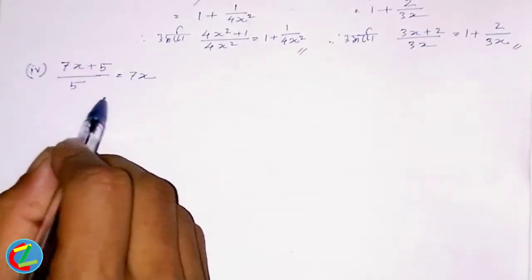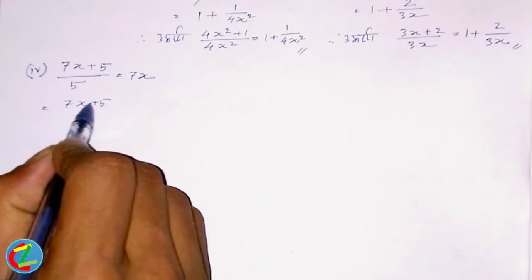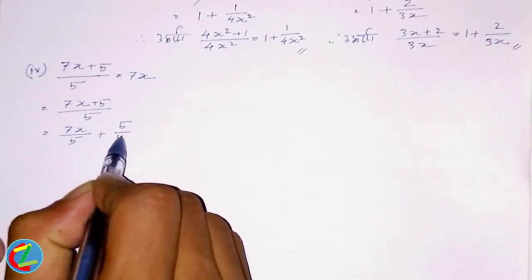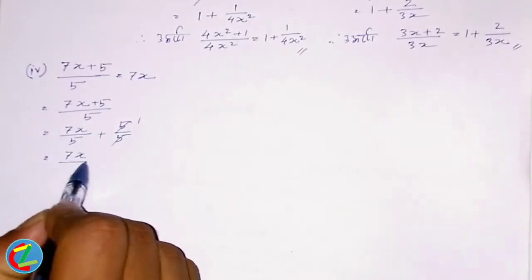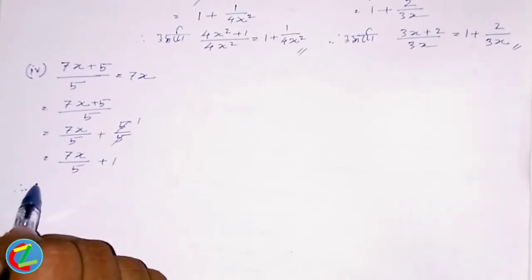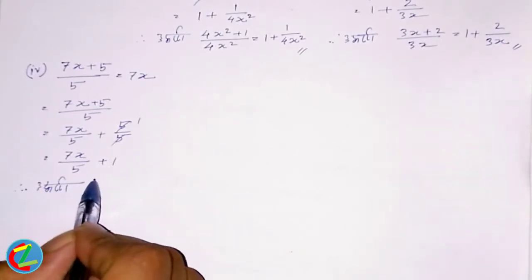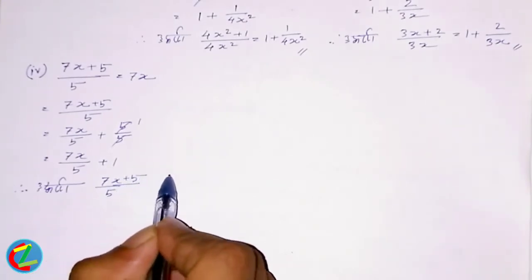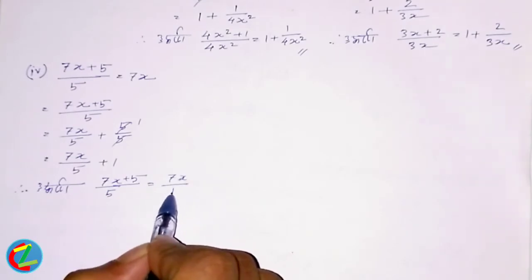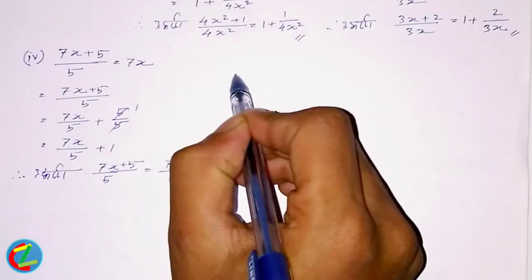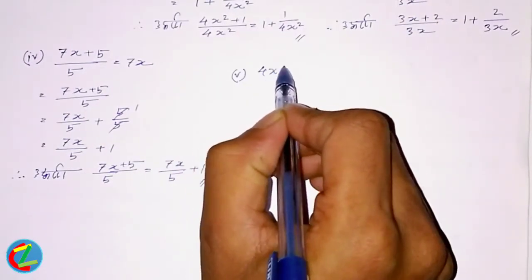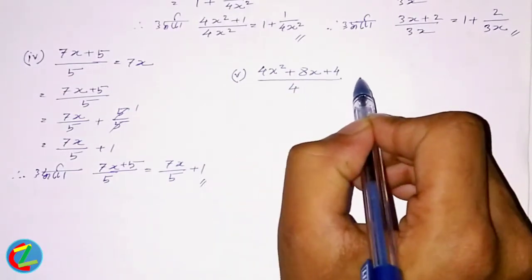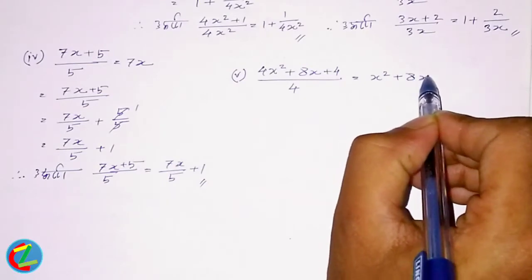7x plus 2 divided by 5 is equal to 7x plus 2 divided by 5, which is equal to 7x plus 5 divided by 5.